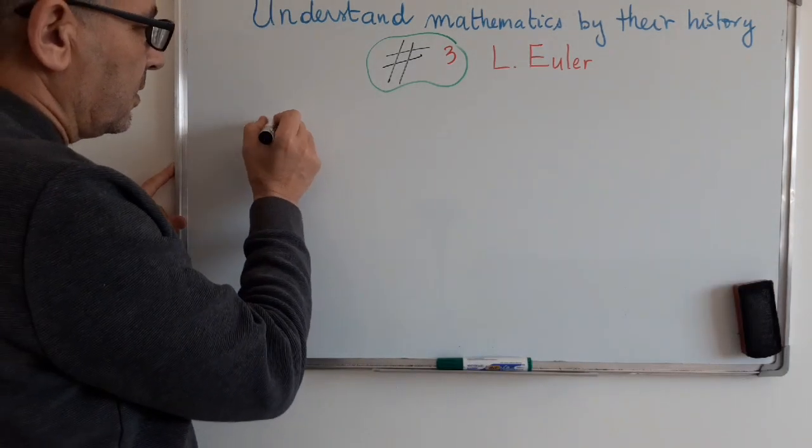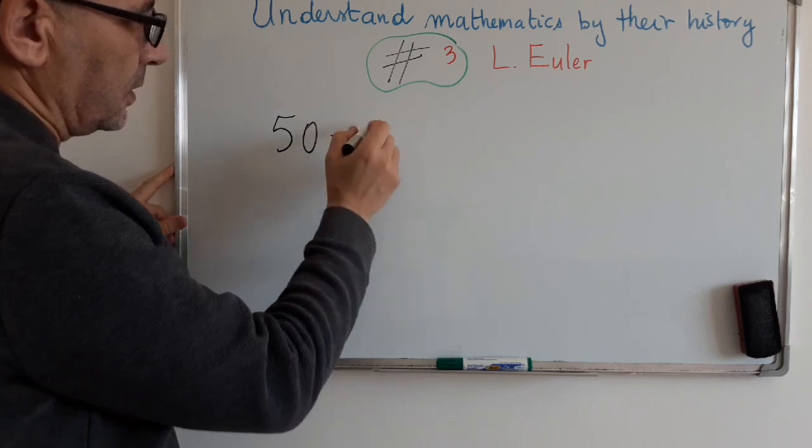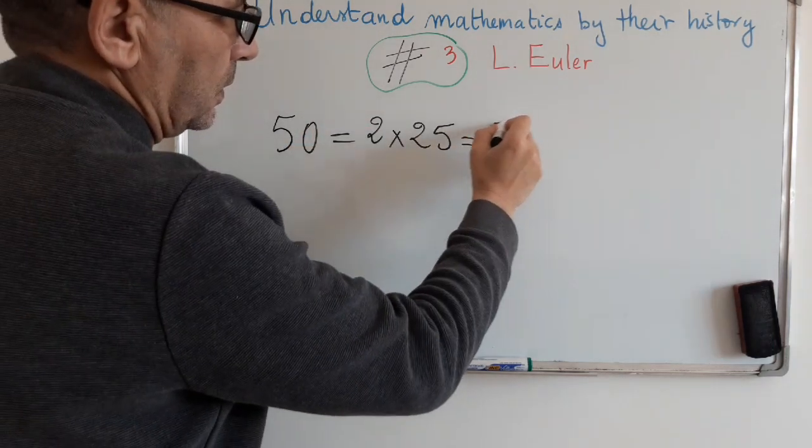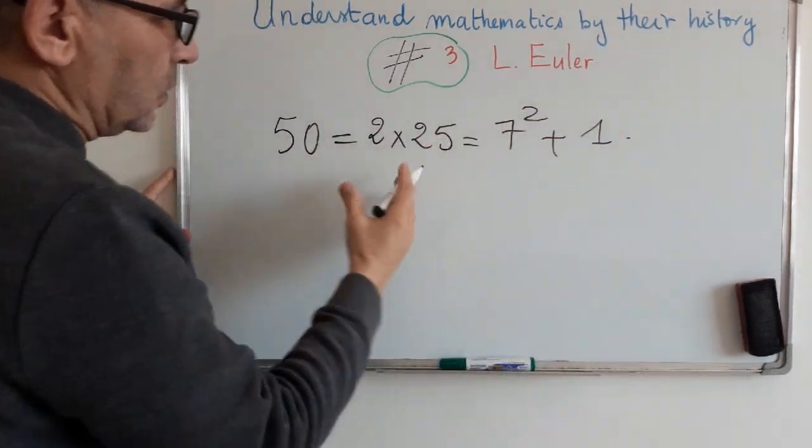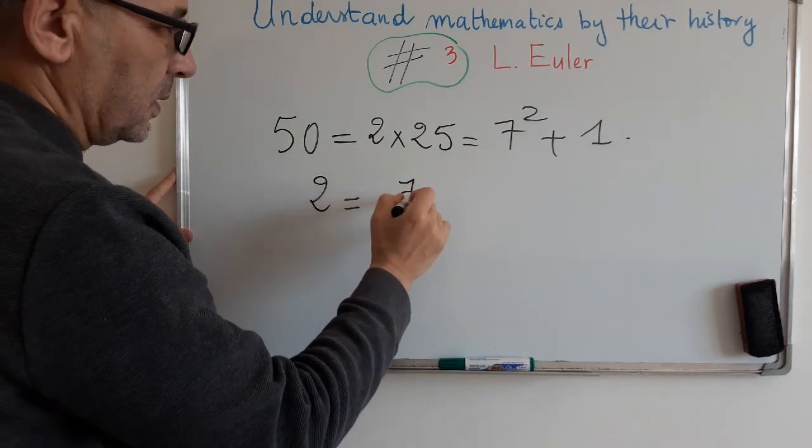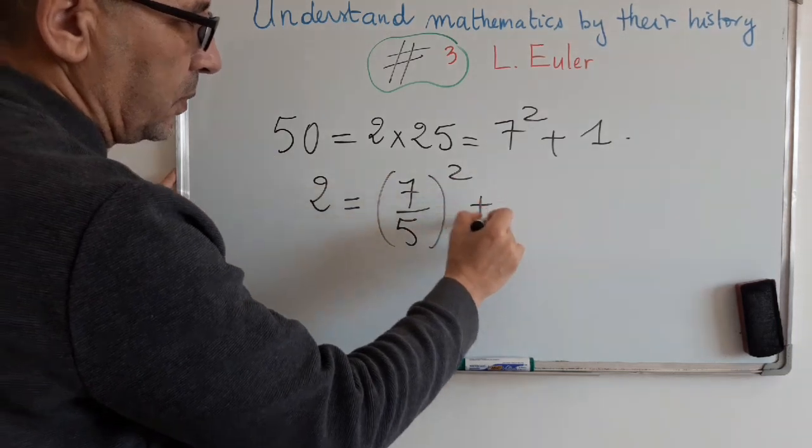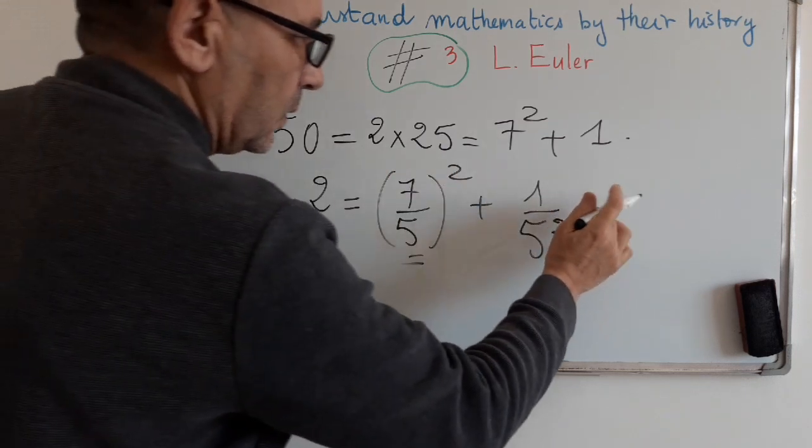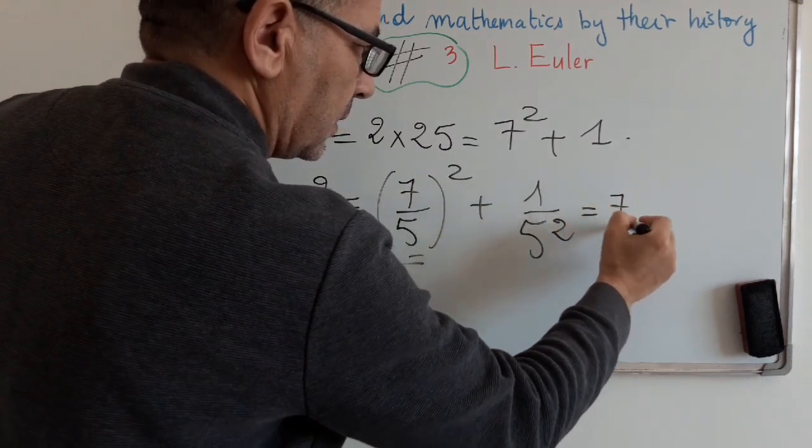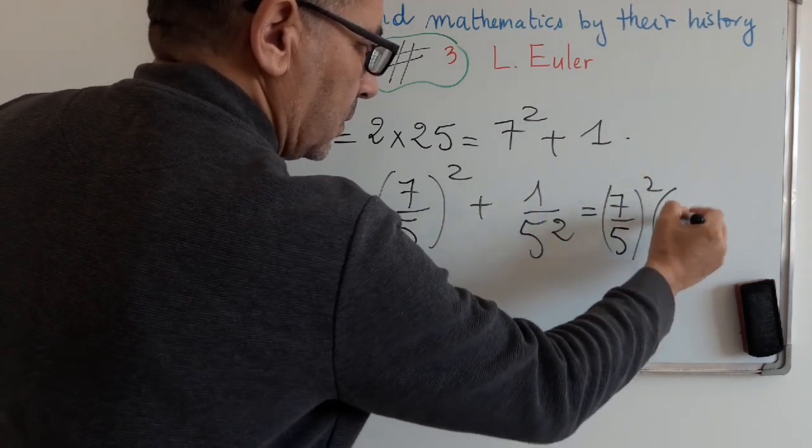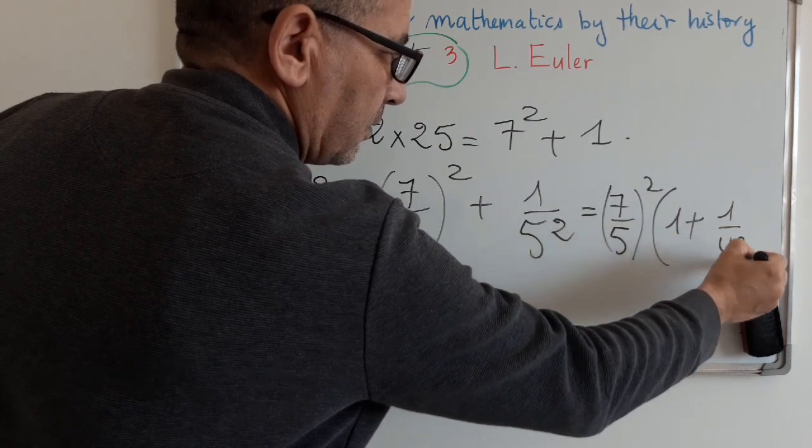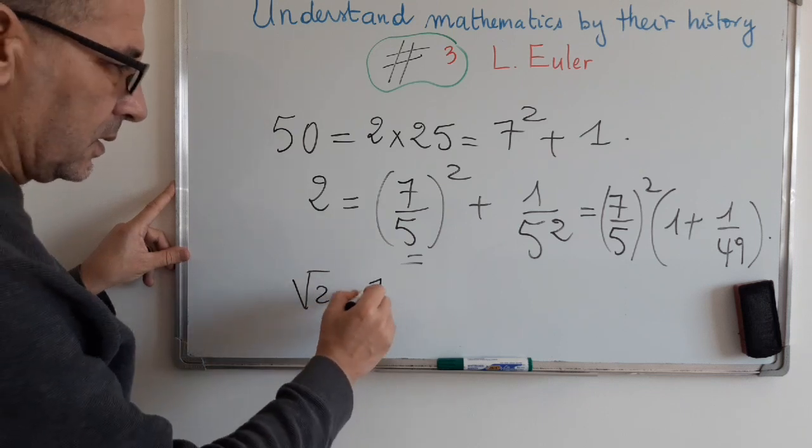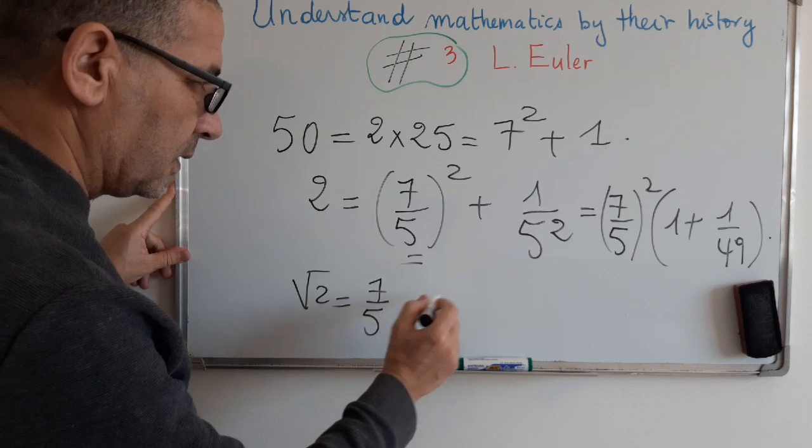By observing that 50 equals 7 squared over 5 squared minus 1, one can deduce the following. 2 equals 49 over 25 plus 1 over 50, and by factoring here, we found that square root of 1 plus 49 over 50. So square root of 2 will be equals 7 over 5.